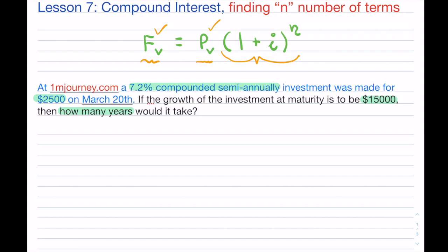If we break this down, and if you've watched all the other videos, we can certainly start this off in the same way. So given that — and I always like to recall — how are we compounding? How many terms do we have in a year? This is semi-annually, so that would be two. Then what is n? Remember, n is the number of years multiplied by m. I don't know that because they're asking me to find out how many years it is, so this is a little bit different of a question.